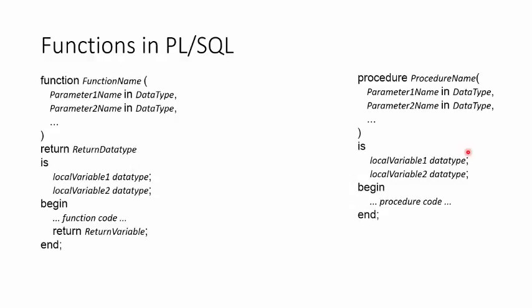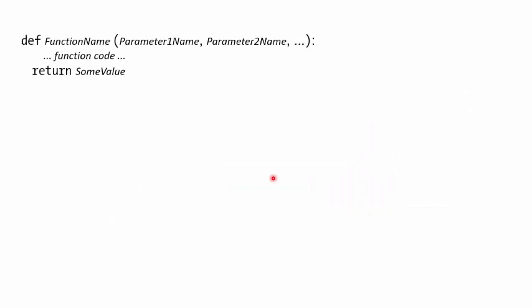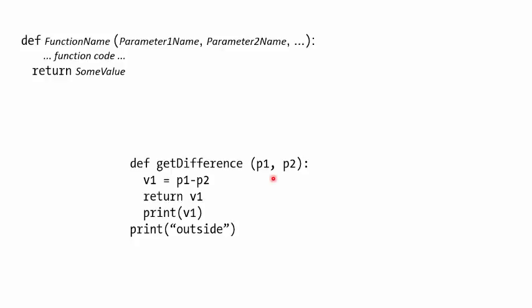In Python, there is no difference between functions and procedures — everything is called a function. The basic syntax uses DEF (which stands for define), followed by the function name and parameters. It returns something very similar to PL/SQL. The DEF keyword indicates the start of the function, then the name of the function, then parameters like p1 and p2.